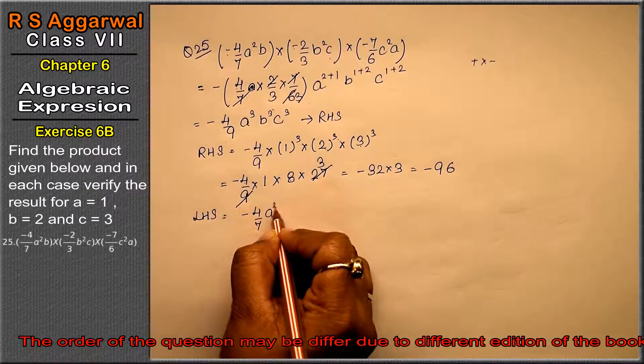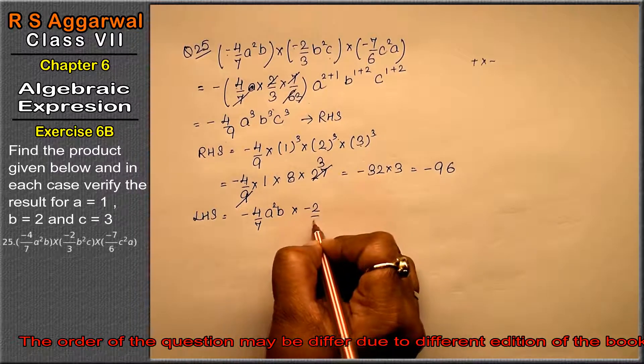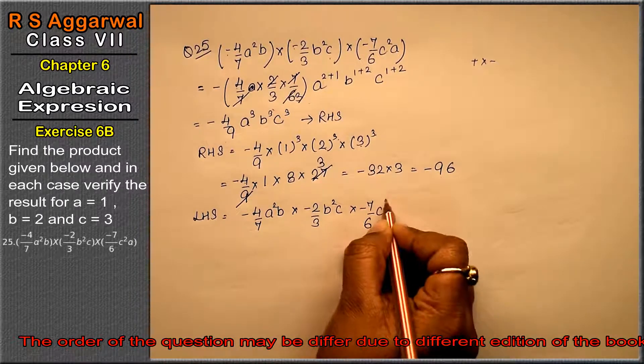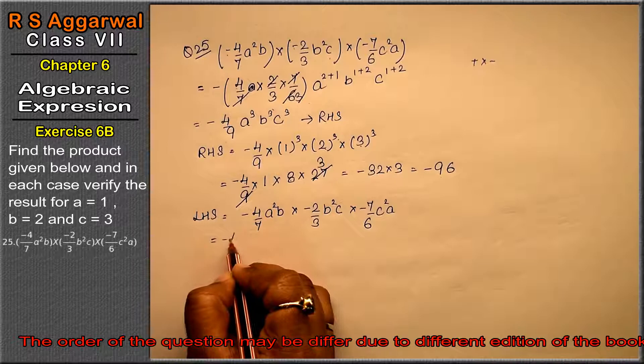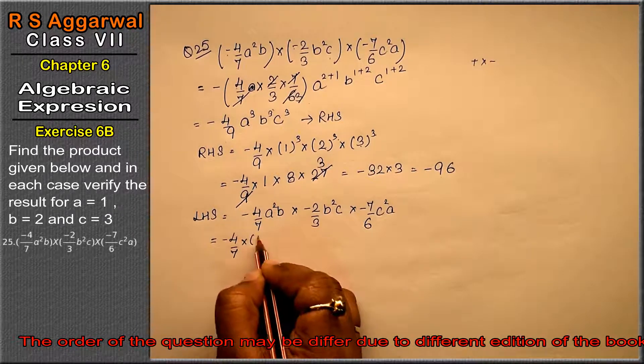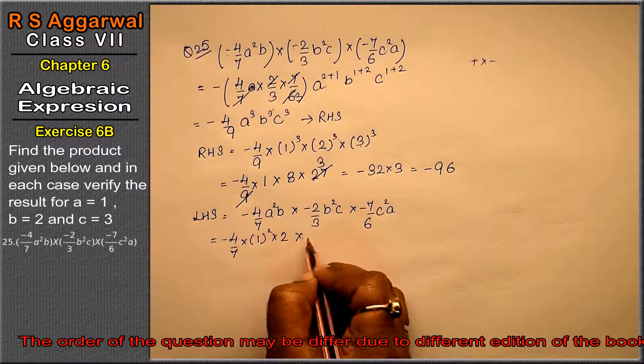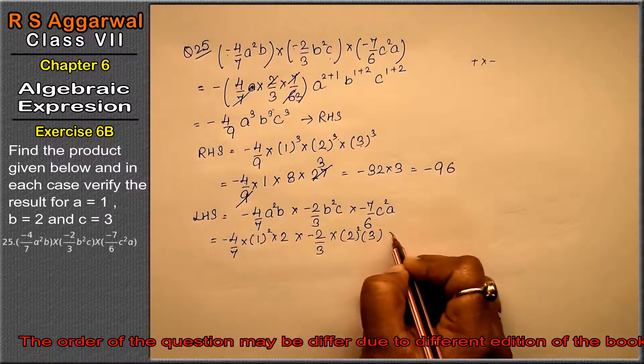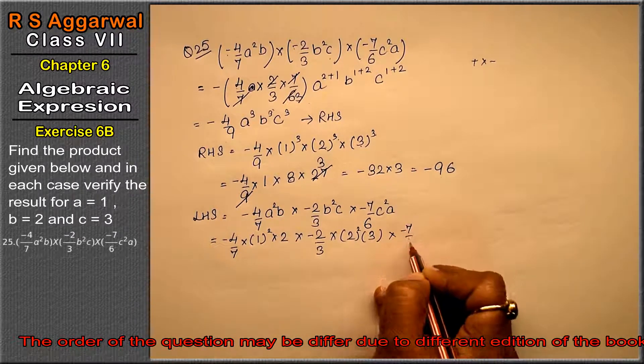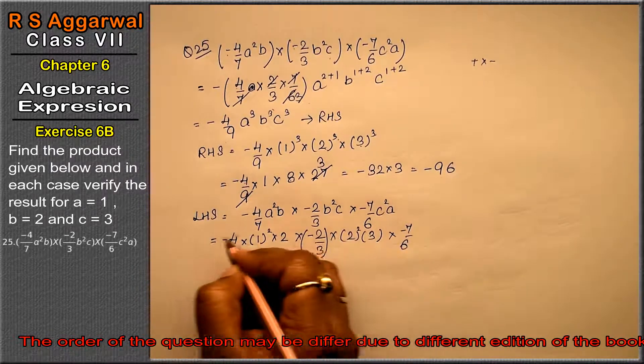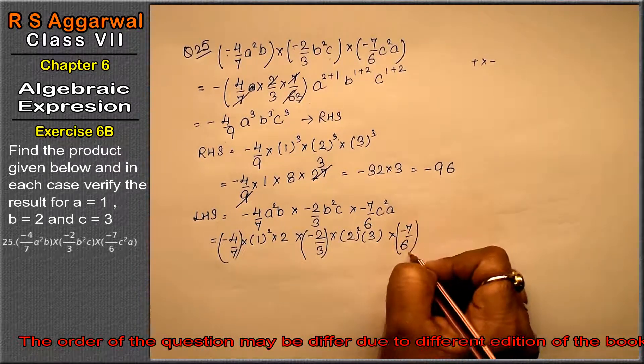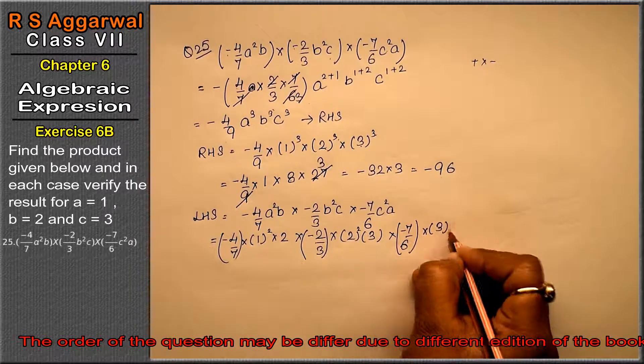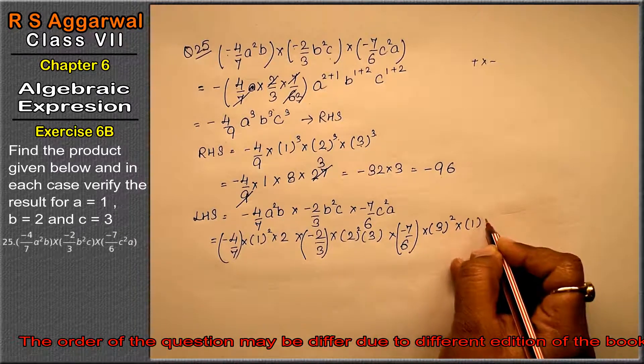Now for the left hand side: minus 4 upon 7 into 1 squared into 2 into minus 2 upon 3 b squared c into minus 7 upon 6 c squared a. So this becomes minus 4 upon 7 into 1 squared into 2 into minus 2 upon 3 into 2 squared into 3 into minus 7 upon 6. We have to keep minus signs in brackets. Into c squared, which means 3 squared, into 1.